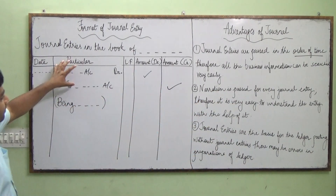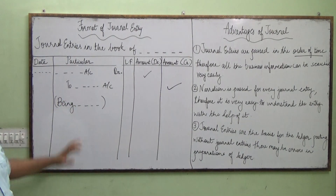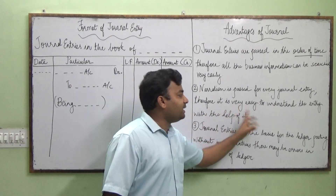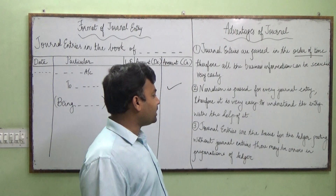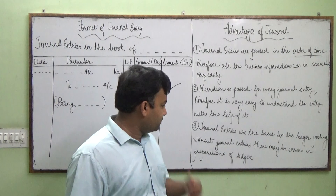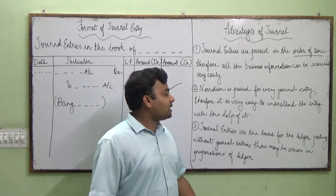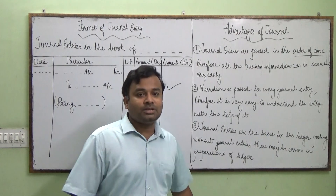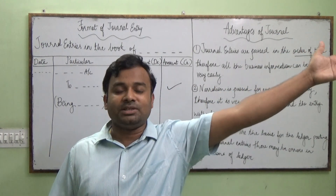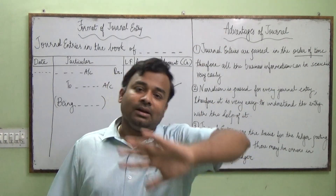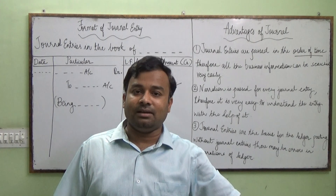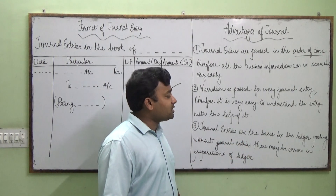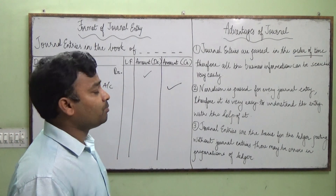The second advantage is that narration is passed for every journal entry. In every entry there is a narration, which makes it very easy to understand the entry. The third advantage is that journal entries are the basis of ledger posting. Without journal entries, the second step of accounting — classification, which is the ledger — cannot be done properly. Without journal entries, there may be errors in the preparation of the ledger.